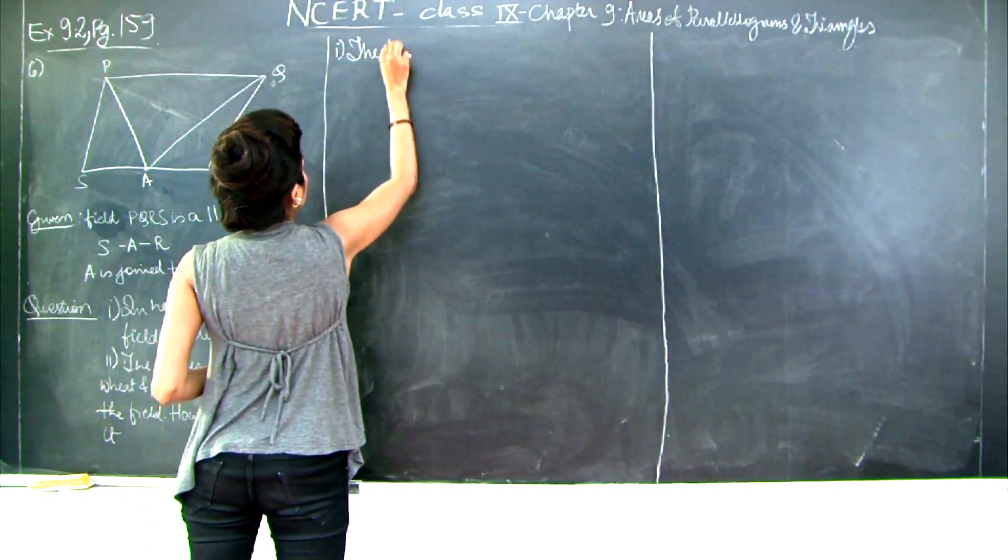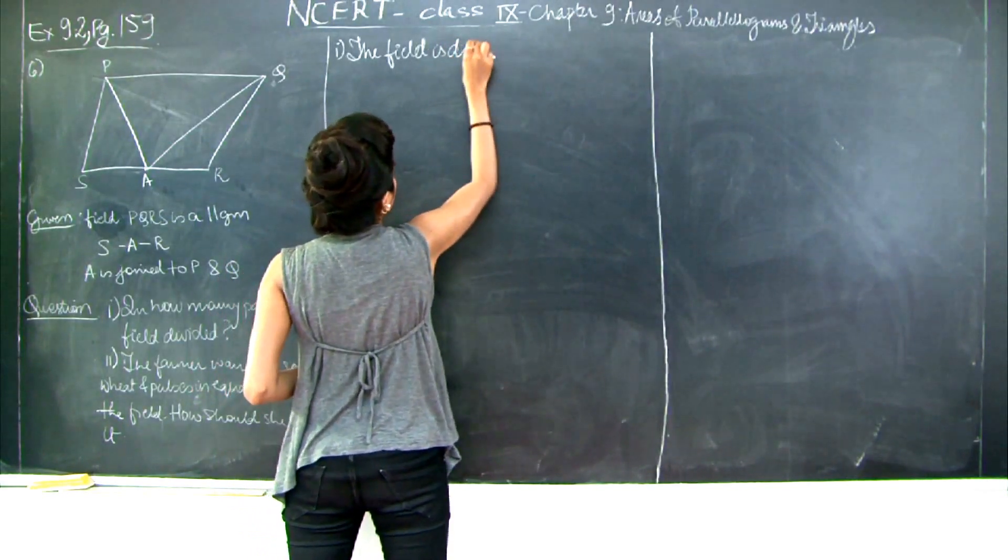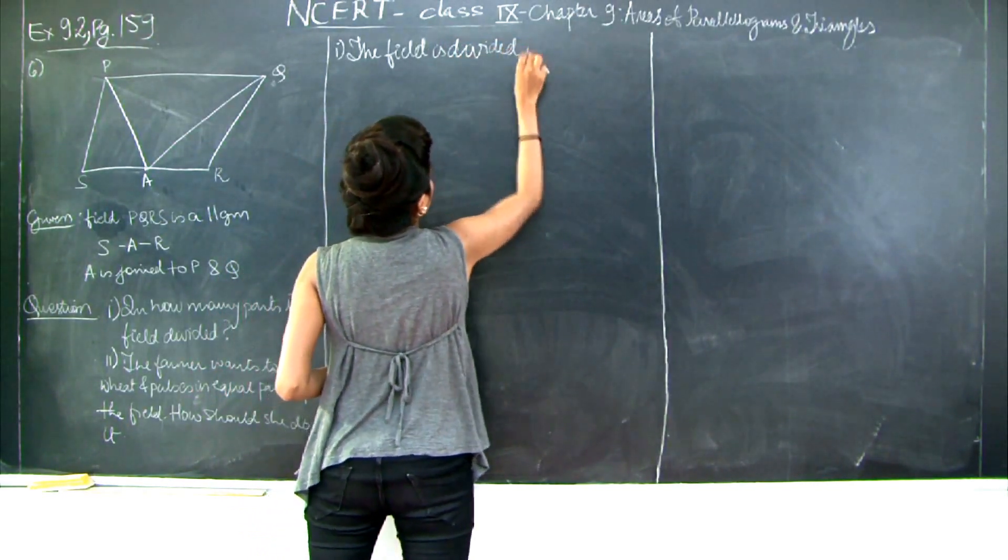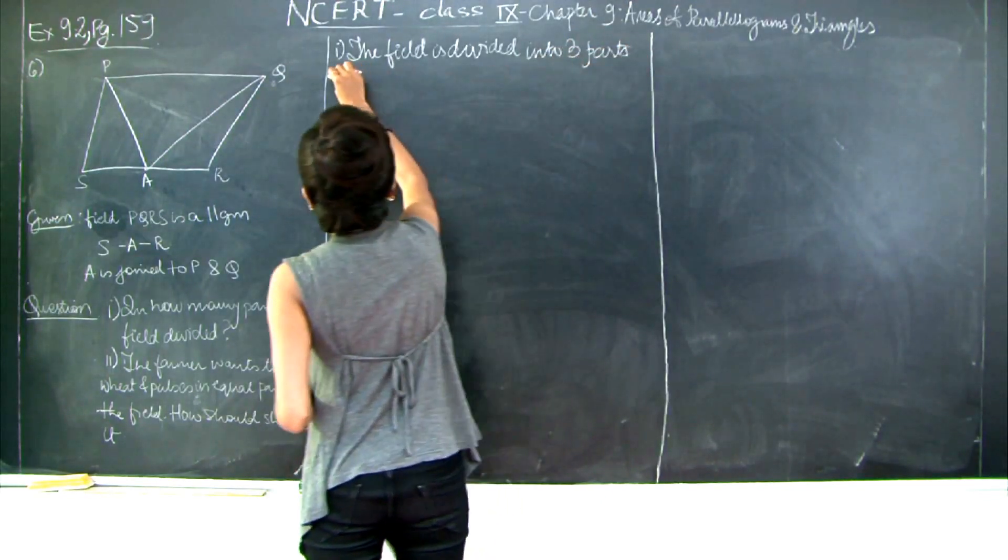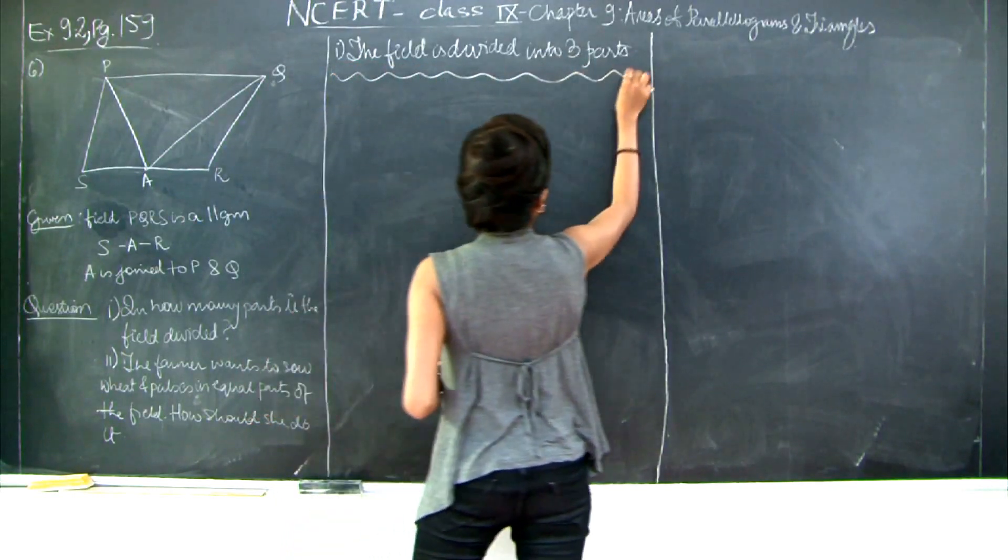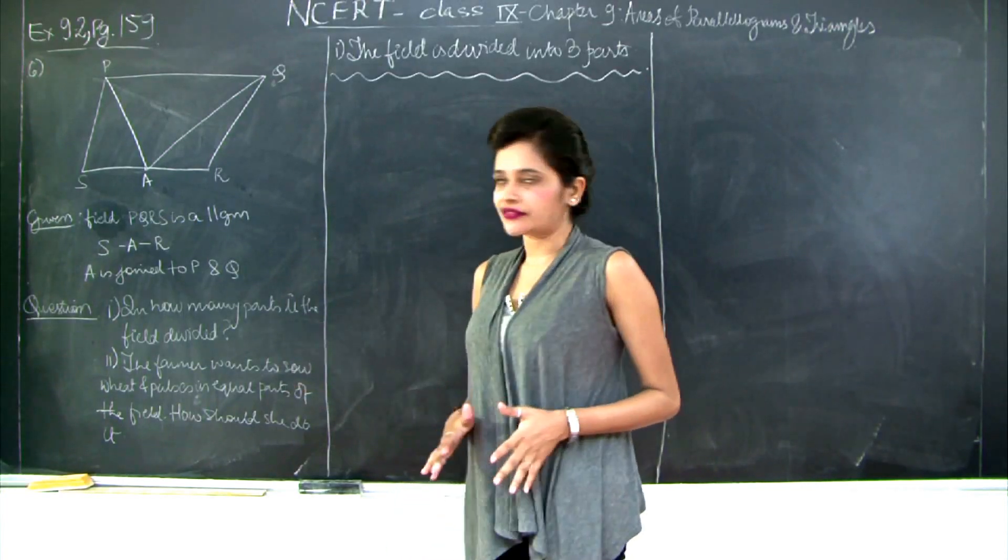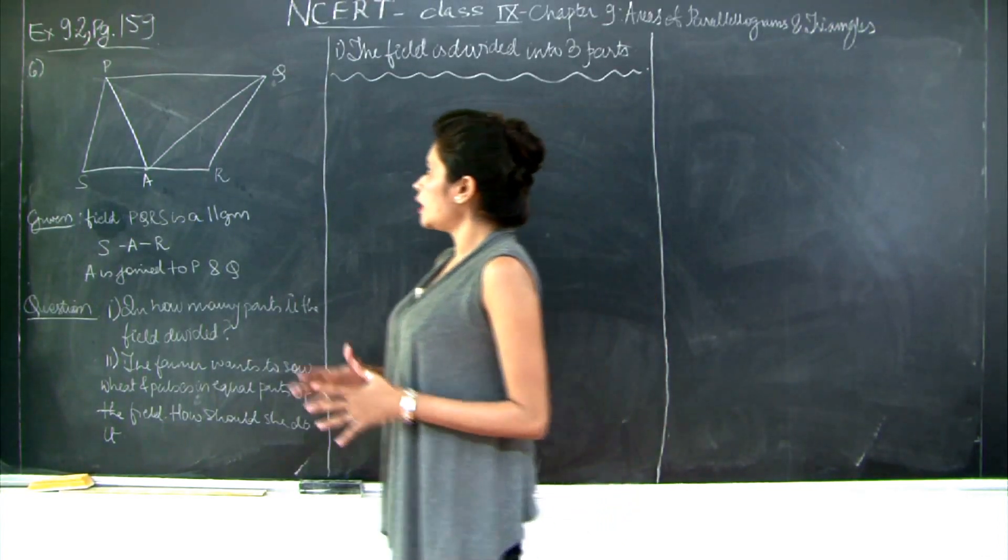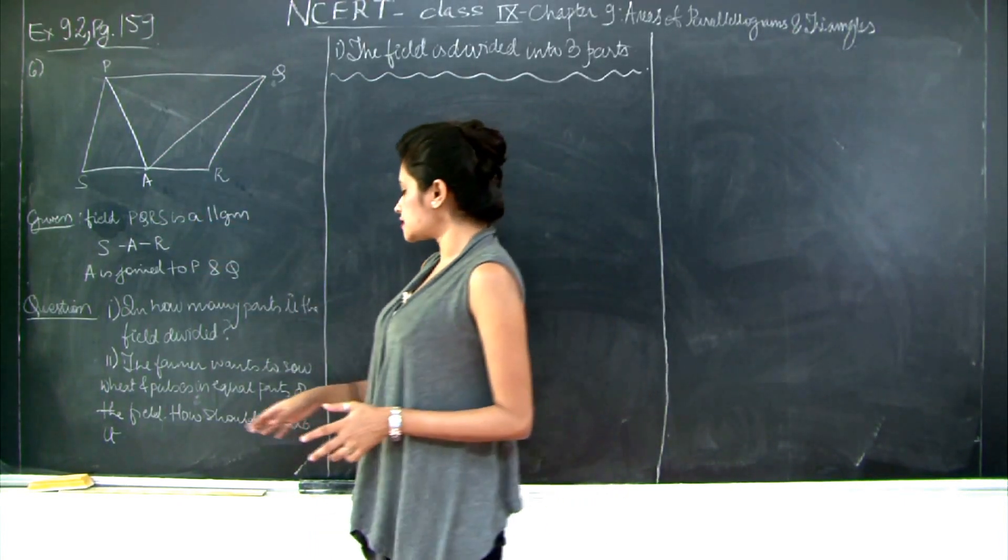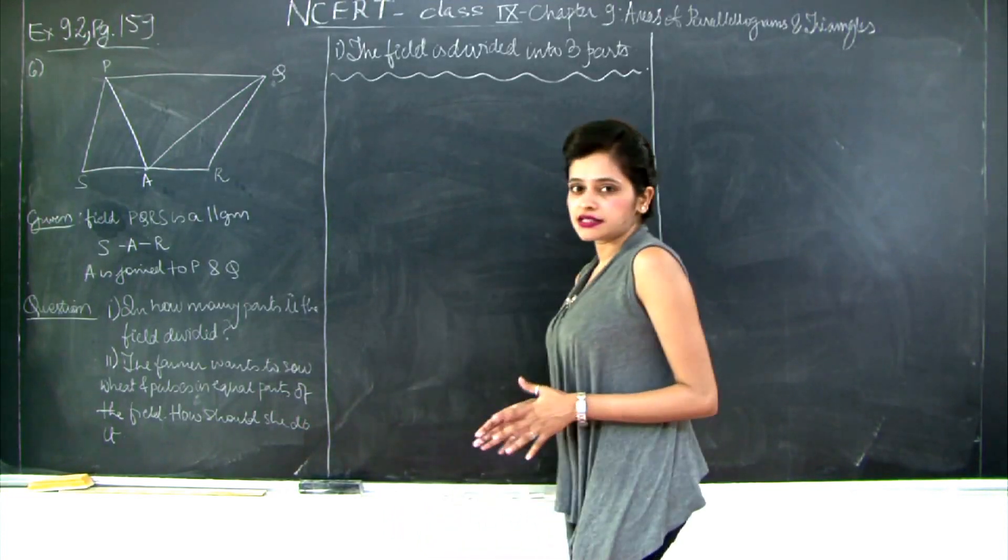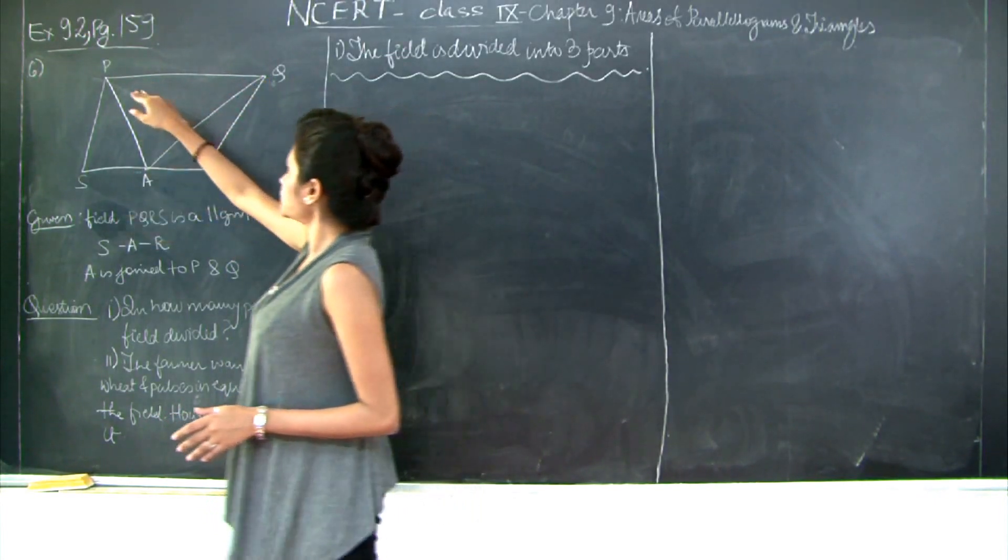So let's write the answer for this. The field is divided into three parts. Now let's see the second question. The farmer of the field, who is the owner of this field, she wants to grow pulses and wheat in equal sections of this field. So the question is how should she do this?